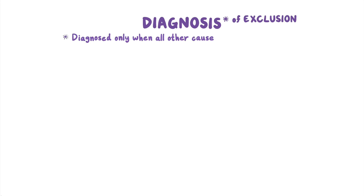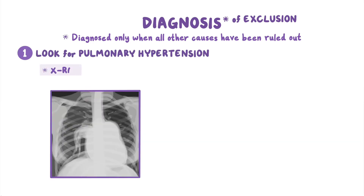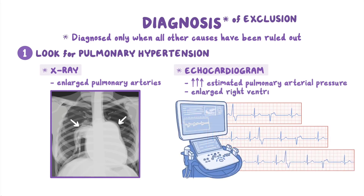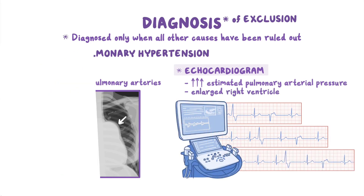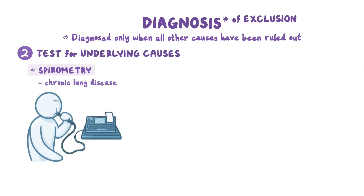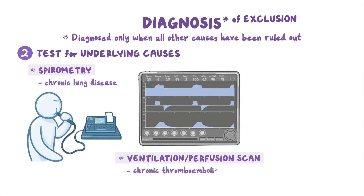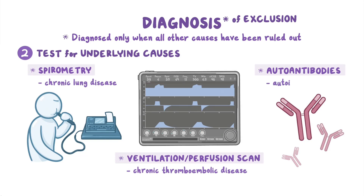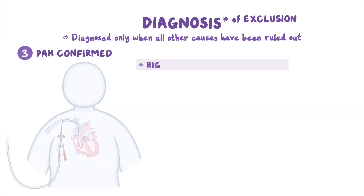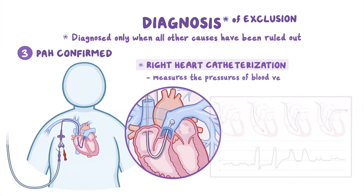PAH is a diagnosis of exclusion, which means that it is diagnosed only when all other causes of pulmonary hypertension have been ruled out. The first step is to look for pulmonary hypertension through a chest x-ray, which shows enlarged pulmonary arteries, or an echocardiogram, which typically reveals increased estimated pulmonary arterial pressure and enlarged right ventricle. Tests are also done to look for underlying causes, like spirometry to look for chronic lung disease, ventilation perfusion scan to rule out chronic thromboembolic disease, and testing for autoantibodies to exclude autoimmune diseases. PAH is confirmed through right heart catheterization to measure the pressures of the blood vessels in the lungs.